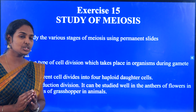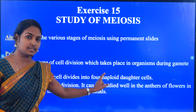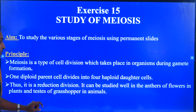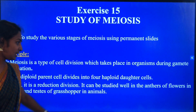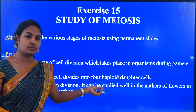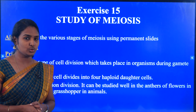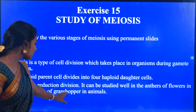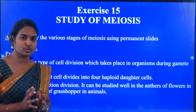So it is reductional division. In the case of plants, we are taking the anther of the flower — flower anther study. But in the case of animals, we will be taking grasshopper testis — grasshopper testis study.